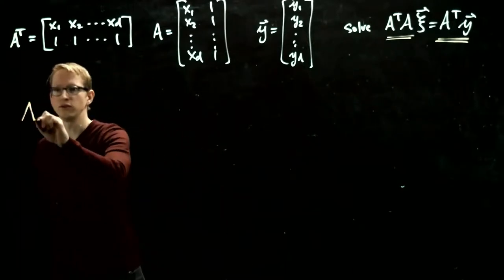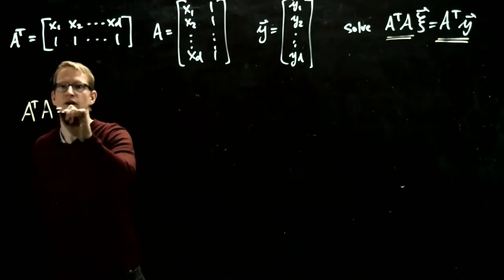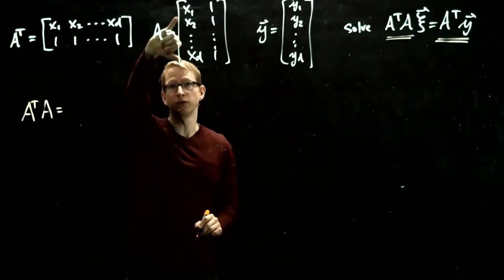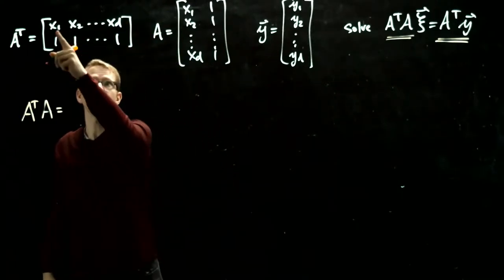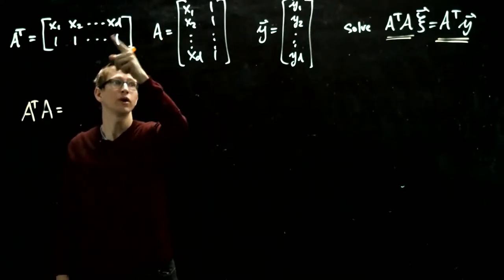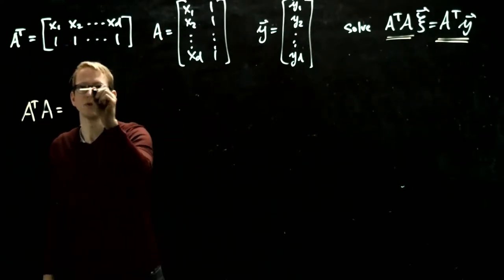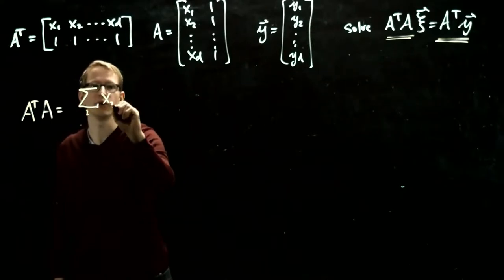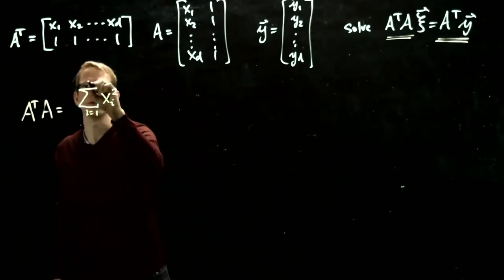So if we multiply these two matrices, it's the first row here times the first, take the dot product with this column. That's x1 squared plus x2 squared plus xd squared. So the first top left entry is the sum of the squares of these entries from 1 to d.